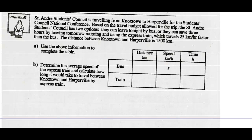Example two: St. Andre Students Council is traveling from Knox Town to Harperville for the Students Council National Conference. Based on the travel budget, they have two options: leave tonight by bus, or save three hours by leaving tomorrow morning using the express train. The express train travels 25 kilometers per hour faster than the bus. The distance between Knox Town and Harperville is 1,500 kilometers.